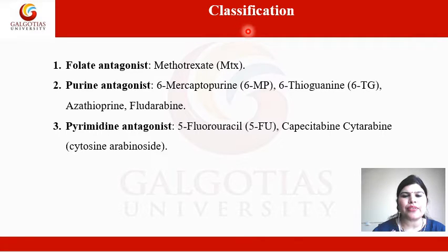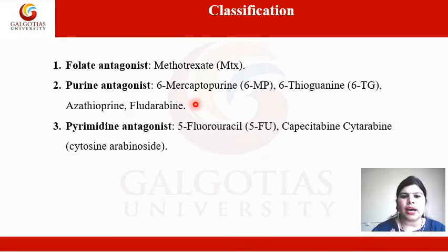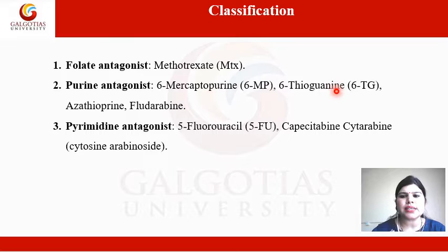Classification of Antimetabolites: Antimetabolites are generally divided into three categories. The first one is folate antagonists; the drug under this category is methotrexate. The second category is purine antagonists — they contain purine in their structure. Drugs under this category are 6-mercaptopurine, 6-thioguanine, azathiopurine, and fludarabine.